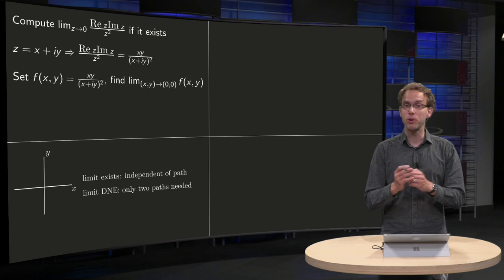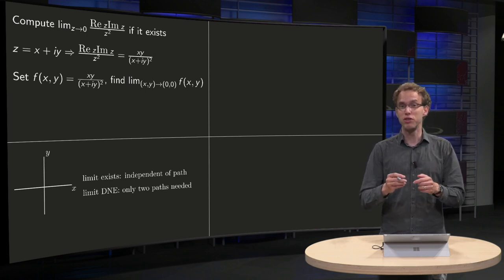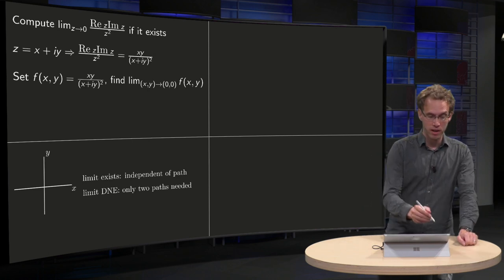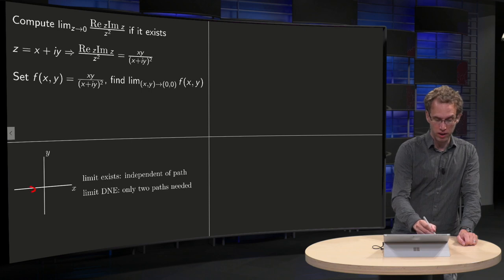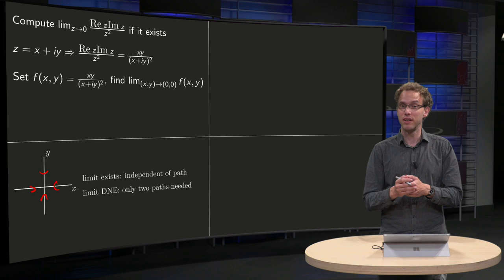So how do we do that? Well this limit exists if it doesn't matter how we approach 0. So we have to approach the origin to 0 and we can approach it along the x axis for example, along the y axis, and in all cases the answer, our limit, should not depend on the direction.